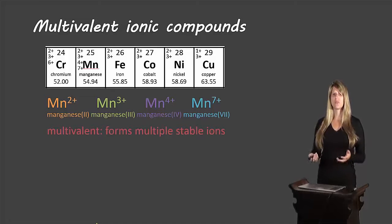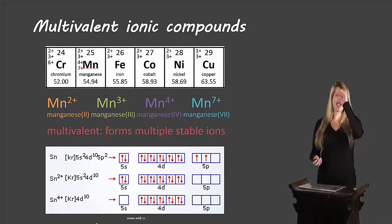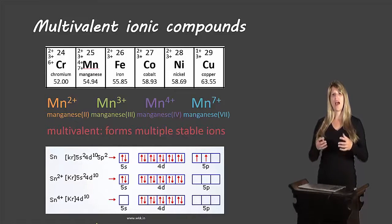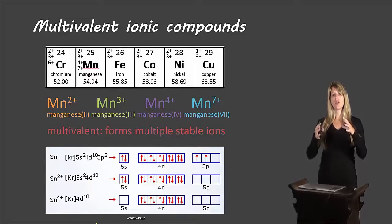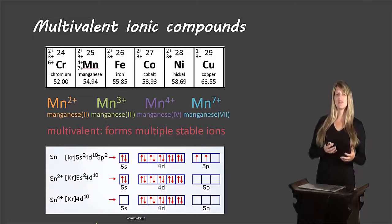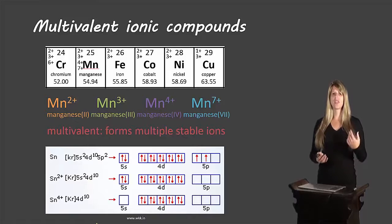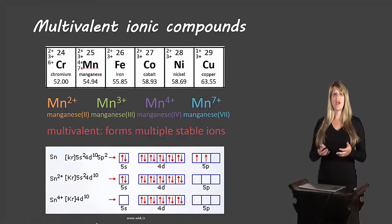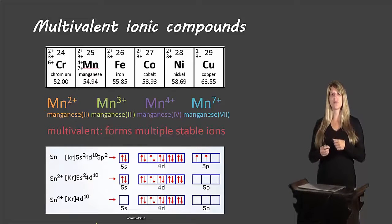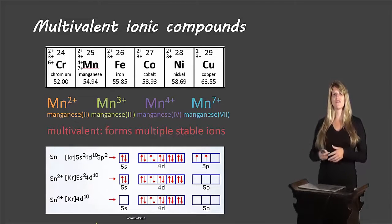Multivalent means that it forms multiple stable ions. If you remember back to our Bohr-Rutherford diagrams, we had very specific rules about how you filled those electron shells — that you needed to fill a shell before moving to the next, and that electrons always come out of the outer shells first. In reality, this isn't quite the truth. Basically, electrons can be pulled from different shells, and depending on which shell and how many electrons are pulled, you can end up with different valences — different numbers of positive charges on these metals.